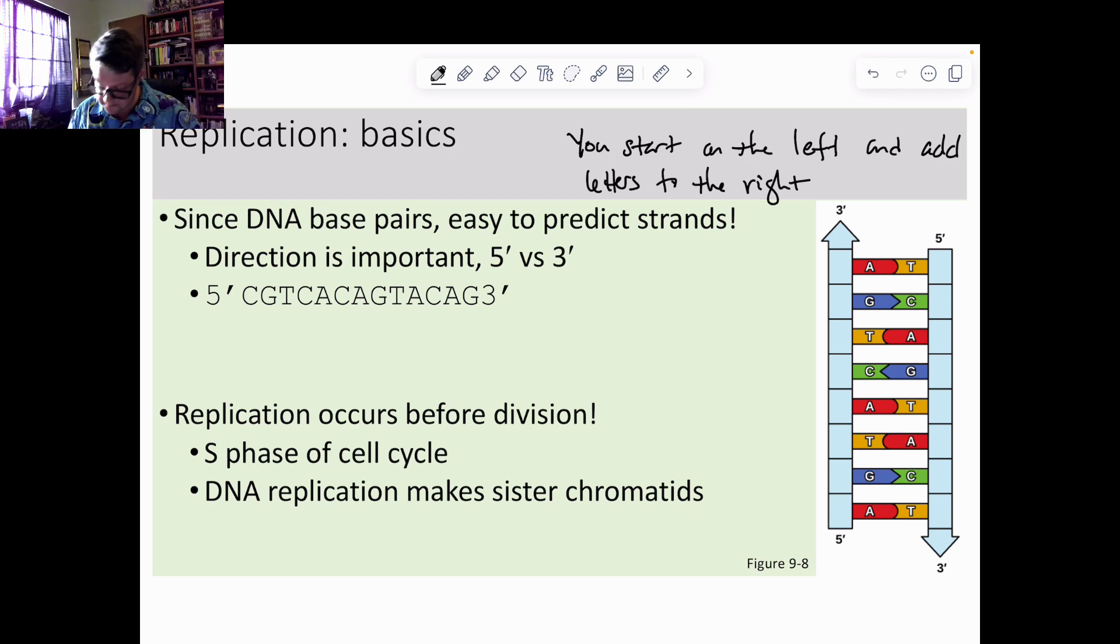So if I had this sequence here, if I were to write this in the way it replicates, it's going to seem rather strange. The sides pair up, so 3 prime end pairs with 5 prime. I always start on the 5 prime end and I would just write C T G T A C T G T G A C G.